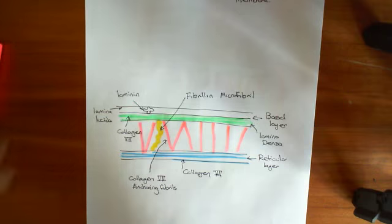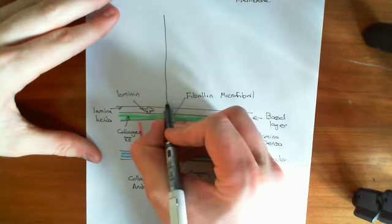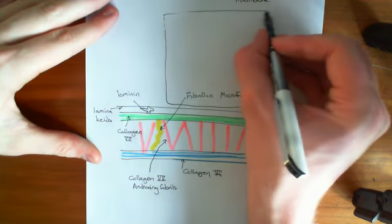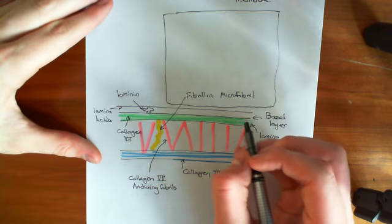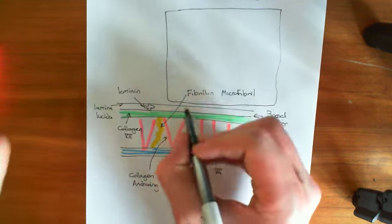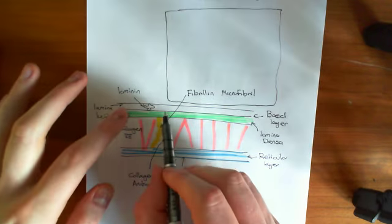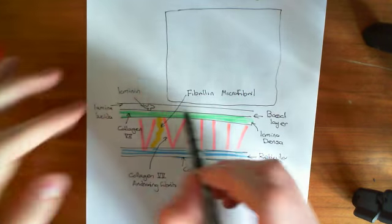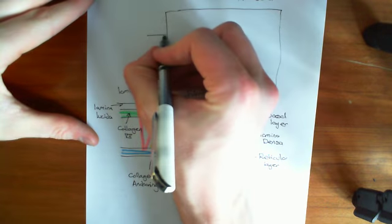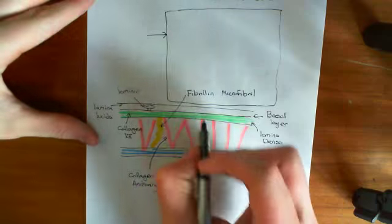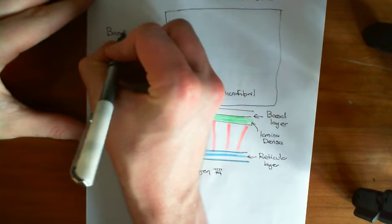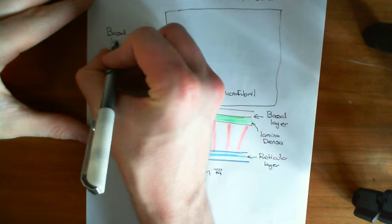Now what we're going to do is we're going to put in a skin cell. We're going to have to draw the hemidesmosome, which is going to connect this cell to this basement membrane. So this is a basal cell keratinocyte here — one of these skin cells that sits on the basement membrane and is actually attached to it. So this is a basal layer keratinocyte.